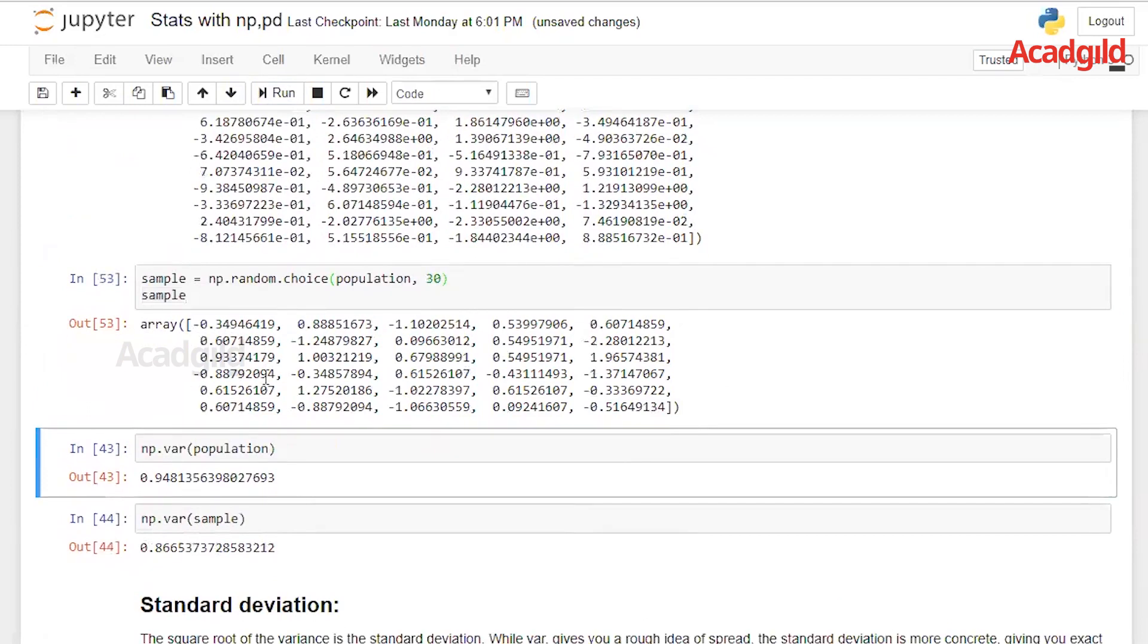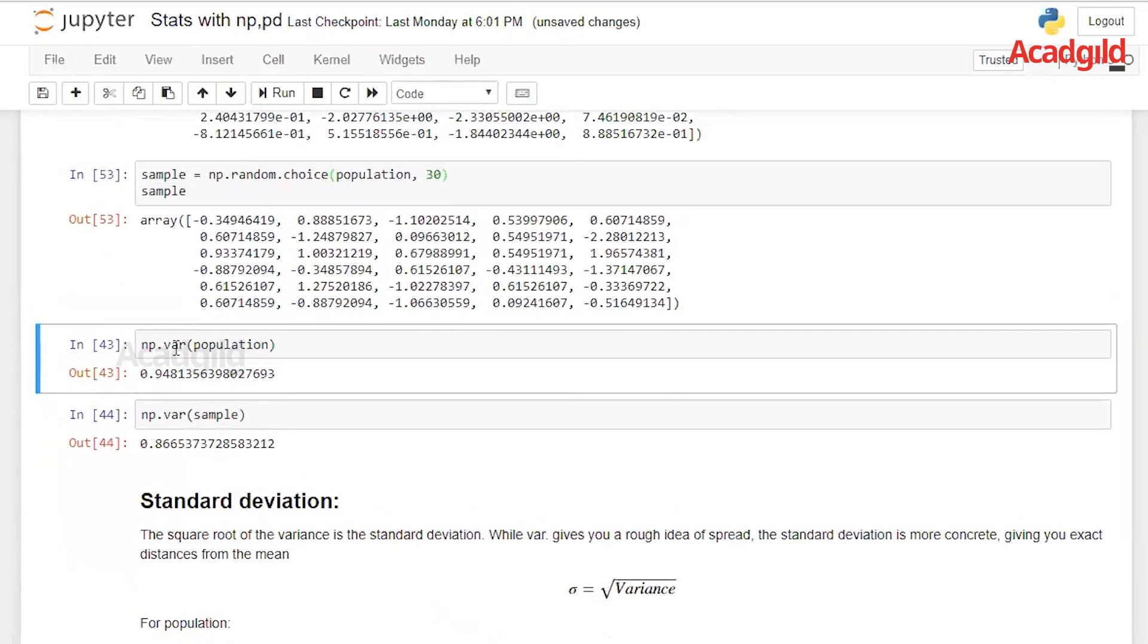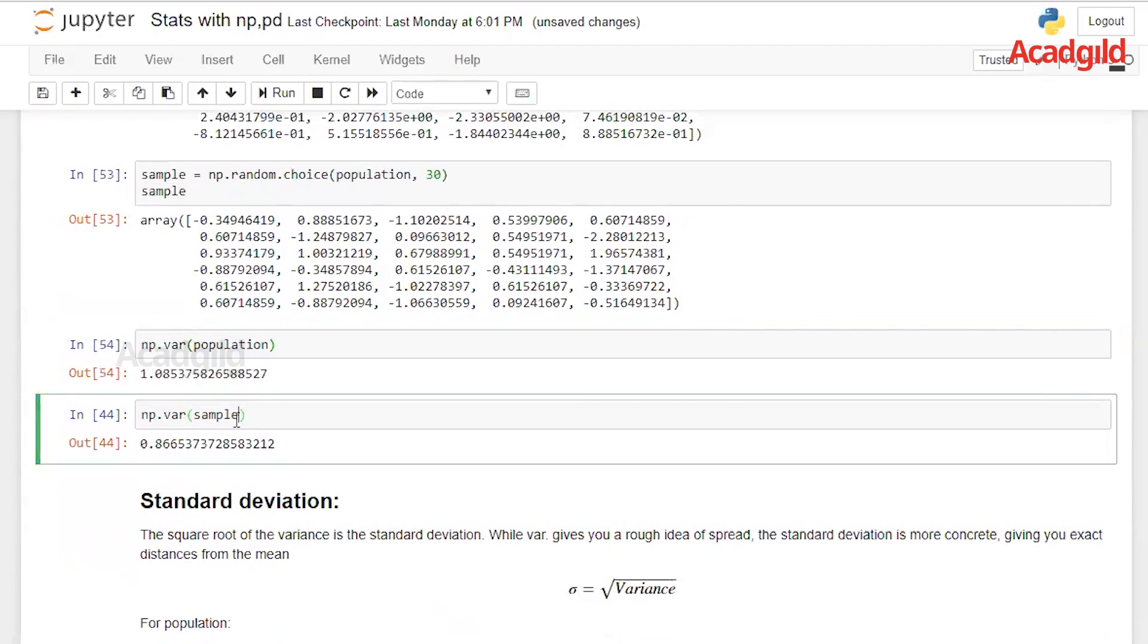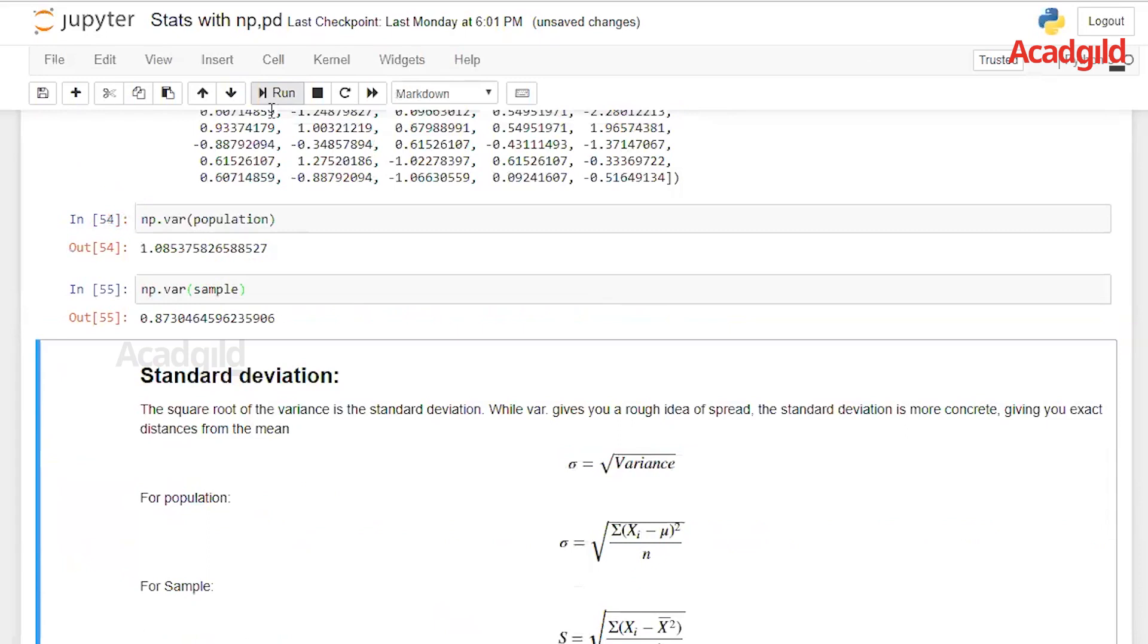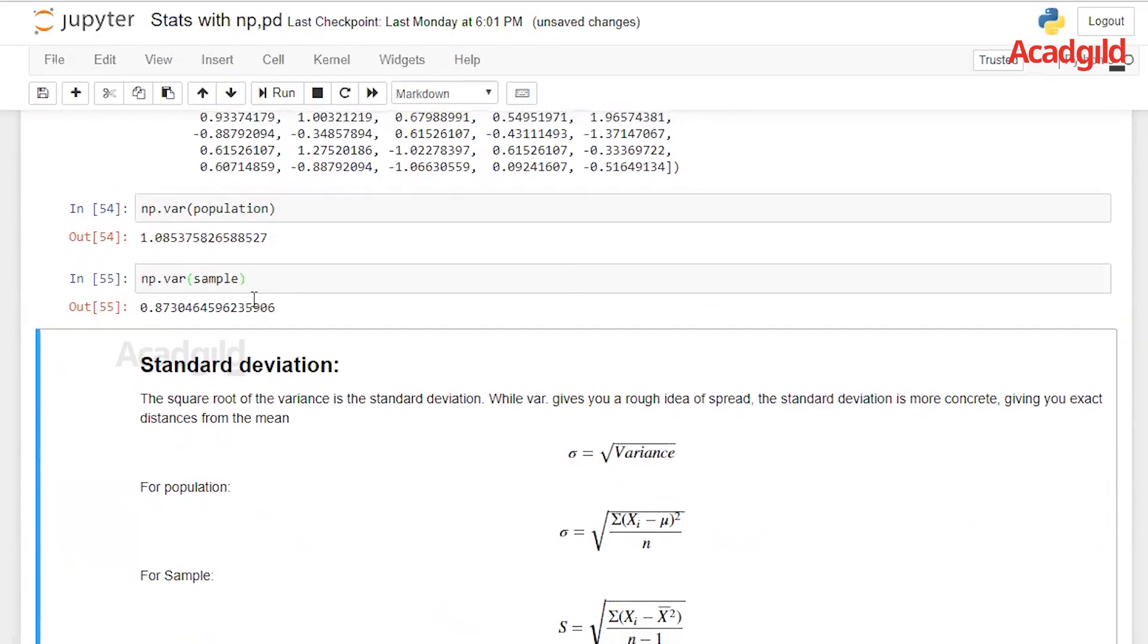To calculate variance of population, it's very simple in NumPy. It is just VAR. This is the sub-module in NumPy and the list. The same goes for sample as well. As you can see, variance in population and variance in sample changes. We will see why this changes in our coming videos.